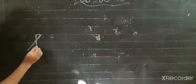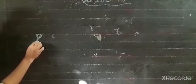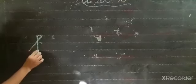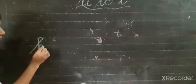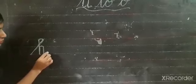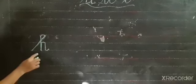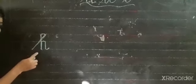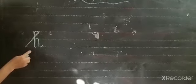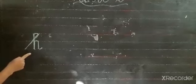From here you have to go up. Go up, then curve. Go up, then curve, then straight line. Then from here you have to do a small curve. What is this? This is H for hand, H for house, H for horse.